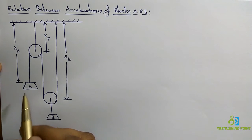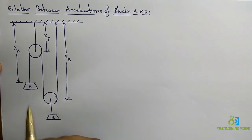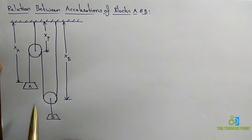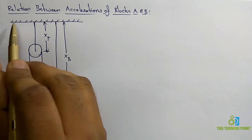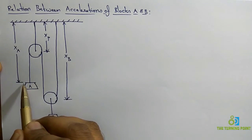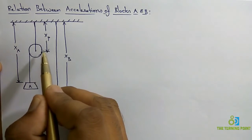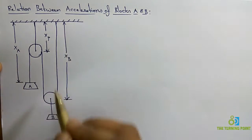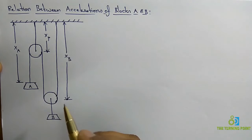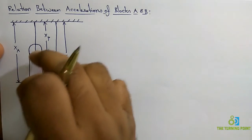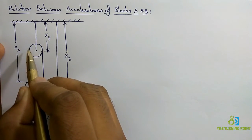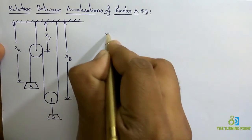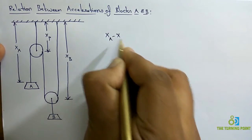I want to establish a relationship between blocks A and B. For that, I will consider the total length. Let us consider the distance from the ceiling to block A as xa, from the ceiling to the movable pulley as xp, and from the ceiling to block B's side as xp. The length from this point to this point is nothing but xa minus xp.